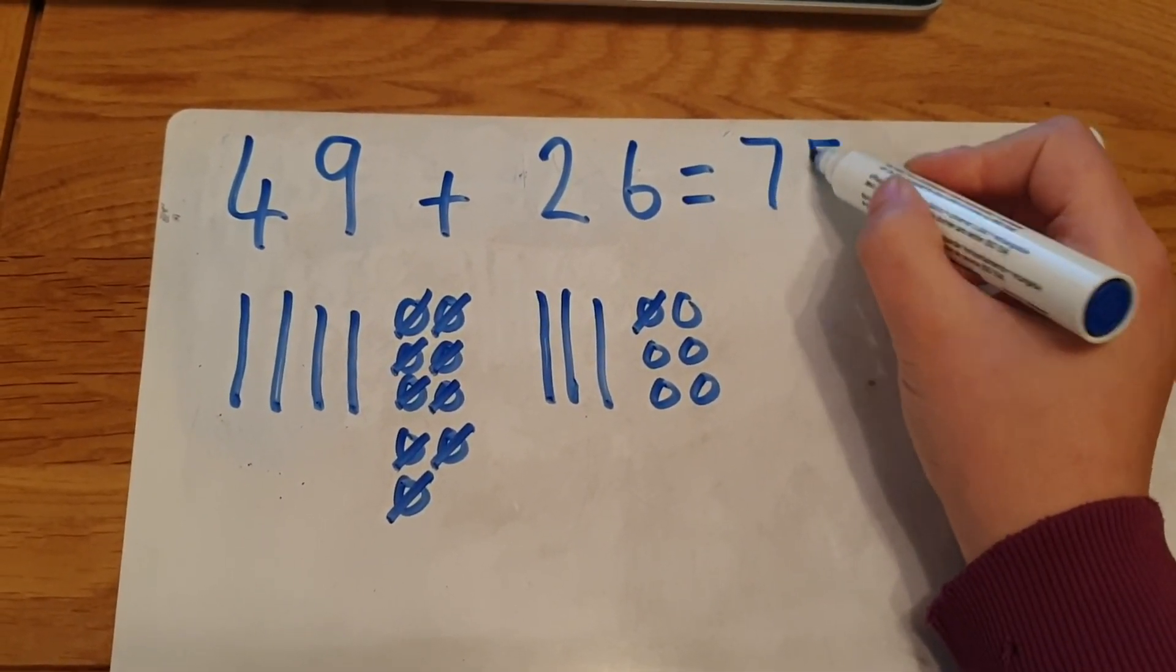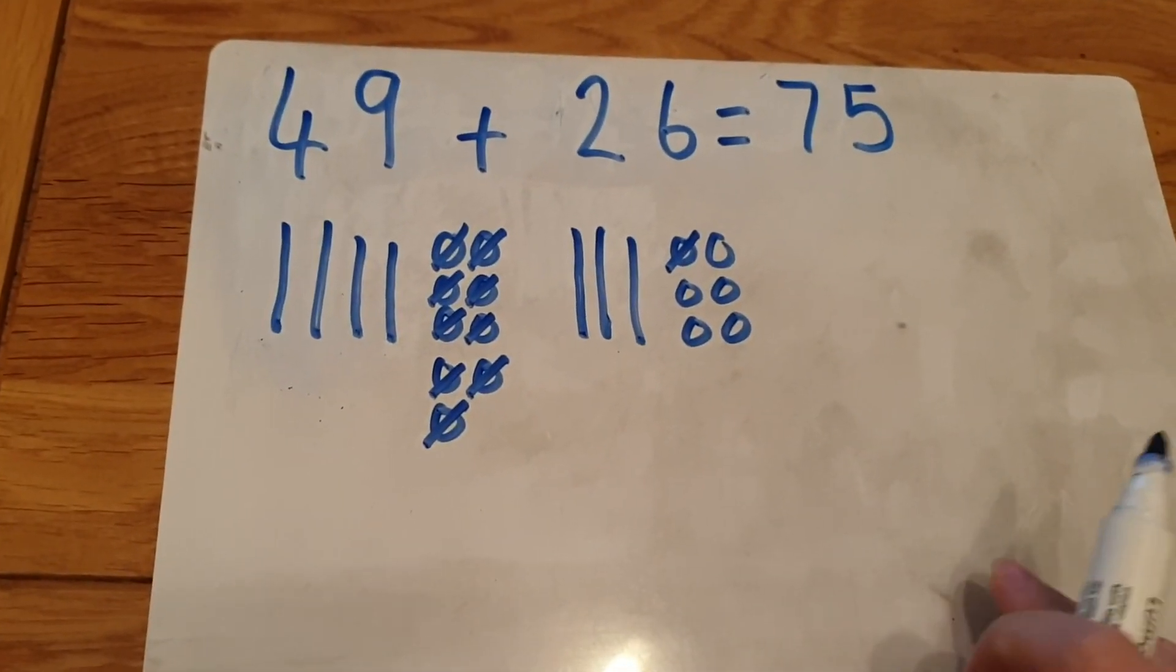Forty-nine add twenty-six equals seventy-five.